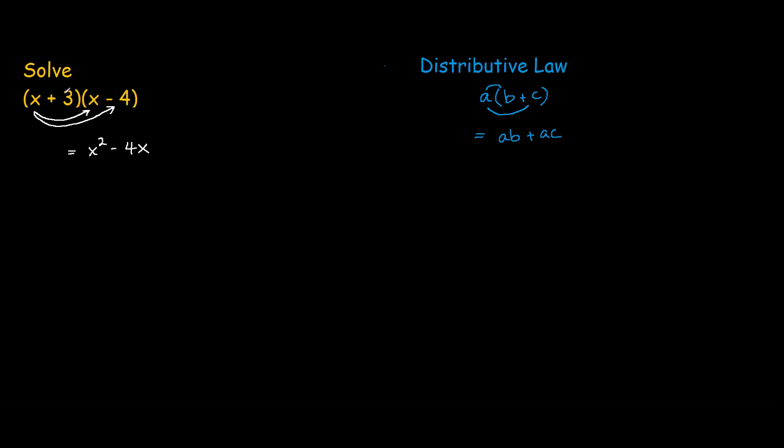Now this is the second step where we treat 3 by itself and distribute that to the right hand side brackets. So 3 times x and 3 times negative 4, so we would have plus 3x and plus 3 times negative 4 is negative 12.